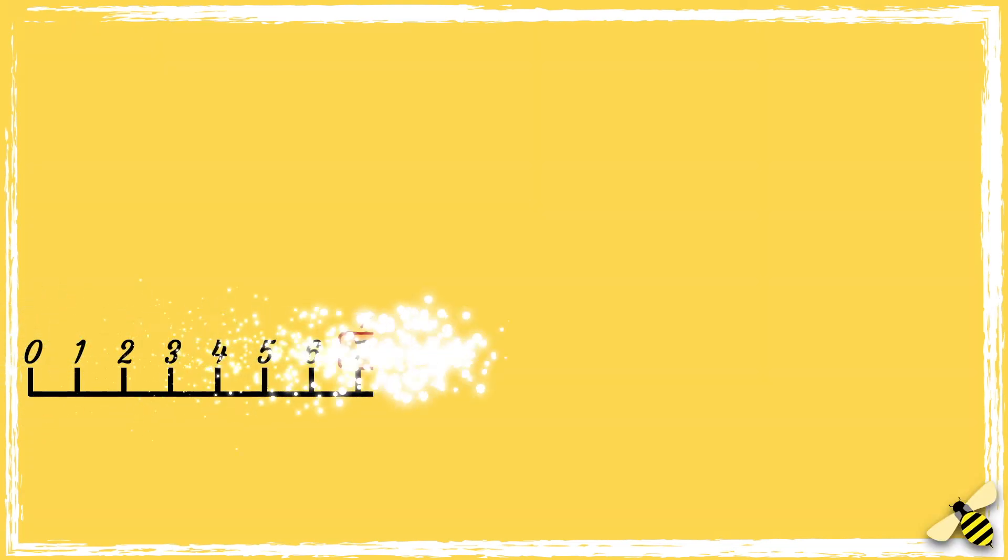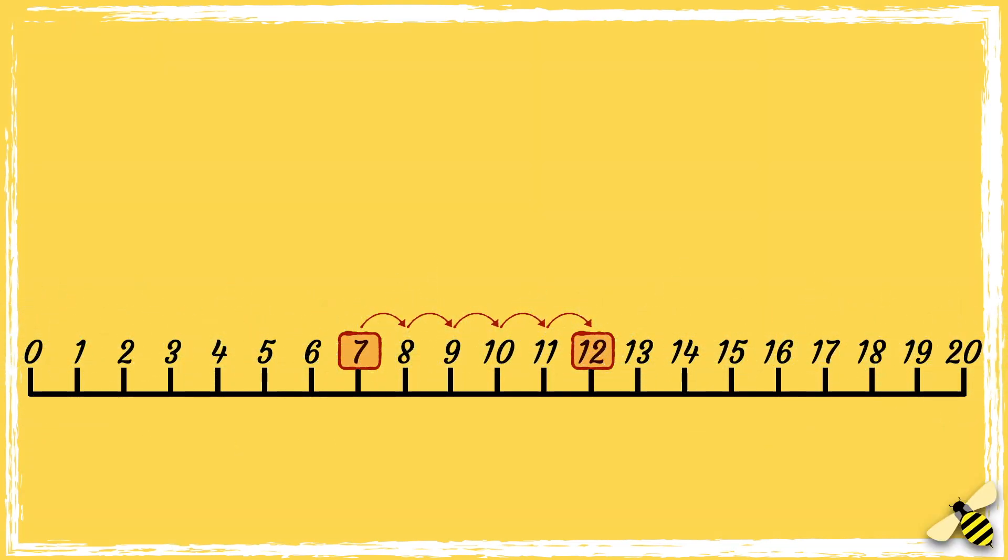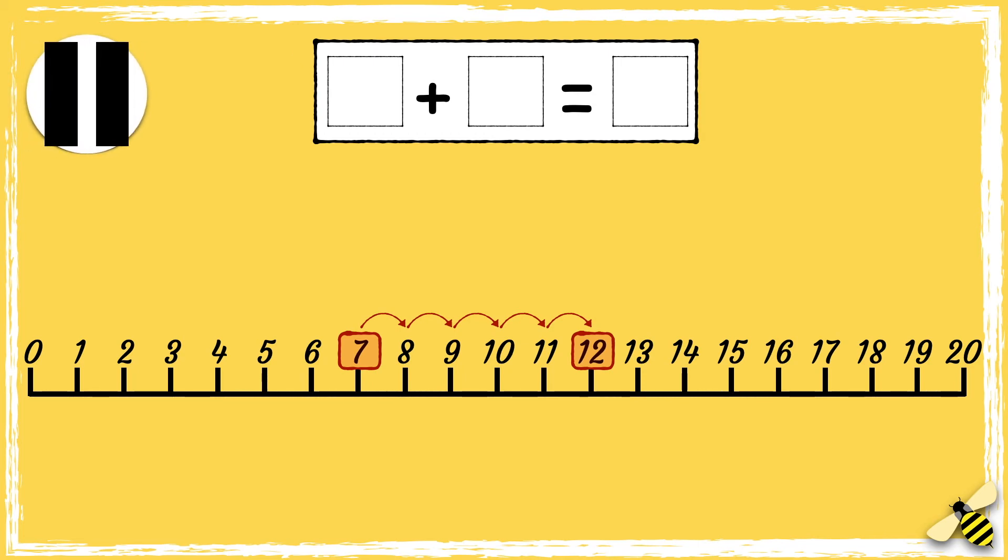Can you have a go at writing a number sentence to match this number line? Think about the number that we've started from, how many jumps have been made, and what number we've landed on. Pause the video to give you time to work out the answer. Press play when you're done.